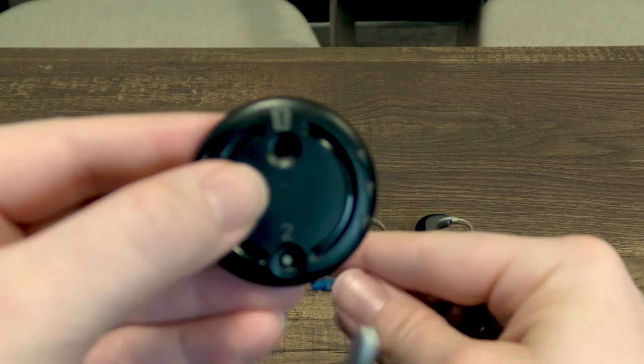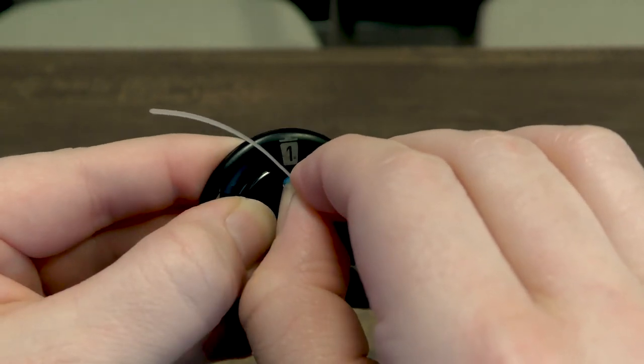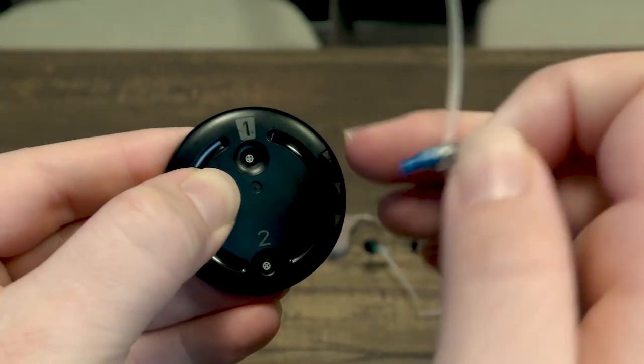So what you do is you want to click the hearing aid into number one and you'll feel it kind of click in and then you simply pull it out and you can see the old filter in the number one spot.